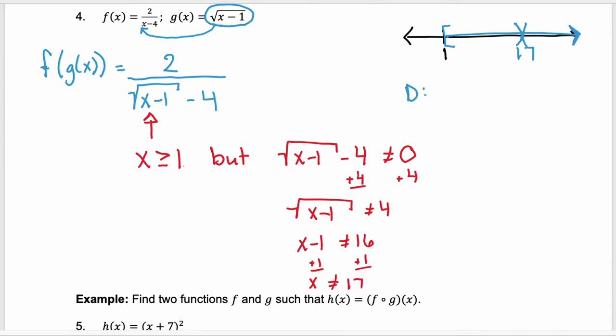So our domain is going to be from 1 to 17. We can include the 1, but we cannot include 17. Or it goes from 17 to positive infinity.